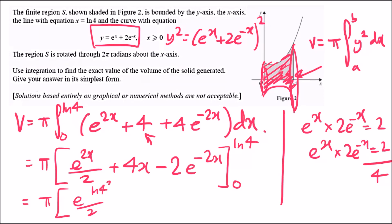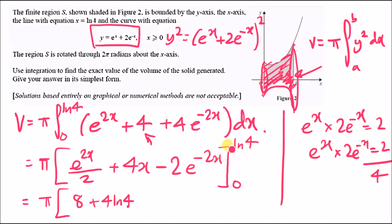Since e cancels with the log, we get 4² = 16, divided by 2 = 8. So the second term is +4ln(4), and the third term −2e^(−2ln4) = −1/8. Combining 8 − 1/8 gives us 63/8. That's the result from the upper limit.